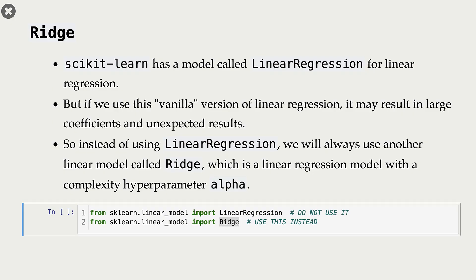Let's talk about linear regression models in scikit-learn. Scikit-learn has a LinearRegression model, but my recommendation is not to use it. Instead, use the model called Ridge. Ridge is the same as linear regression except that it has a complexity hyperparameter called alpha. Using vanilla linear regression, you might get very large coefficients for features and unexpected results. So my recommendation, for this course and in general, is to use Ridge instead of linear regression.